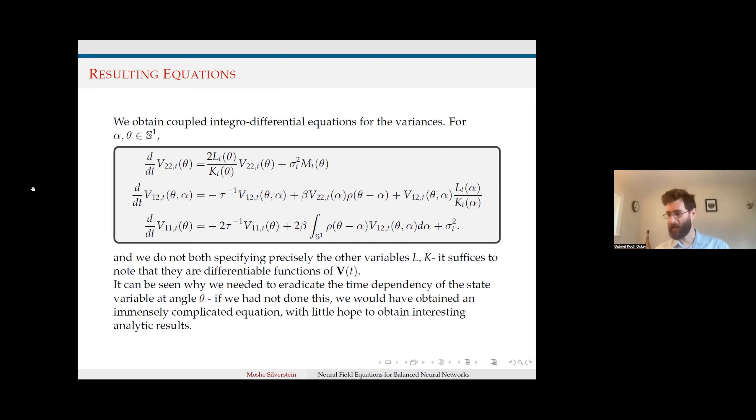Next question: Thanks for the nice talk. I'm wondering how the single unit dynamics show up in your resulting ODEs for the covariance. You mentioned this might be extensible to other kinds of models, so how would that play out? I'm wondering how the single unit dynamics, which for this rate network are just the leak term, show up in these ODEs and how modifications to those single unit dynamics would change the ODEs for the covariance.